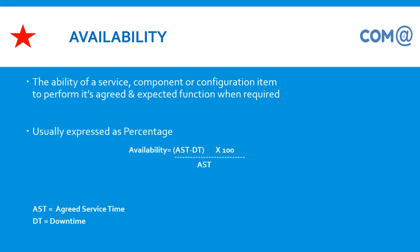Availability is very important for the organization as it predicts the company's quality and service support for customers. For example, a banking website should always be available for end users — whenever they want to access it, do a money transaction, or purchase anything from third-party websites, they can go to the banking website, provide their username and password, and complete transactions successfully.